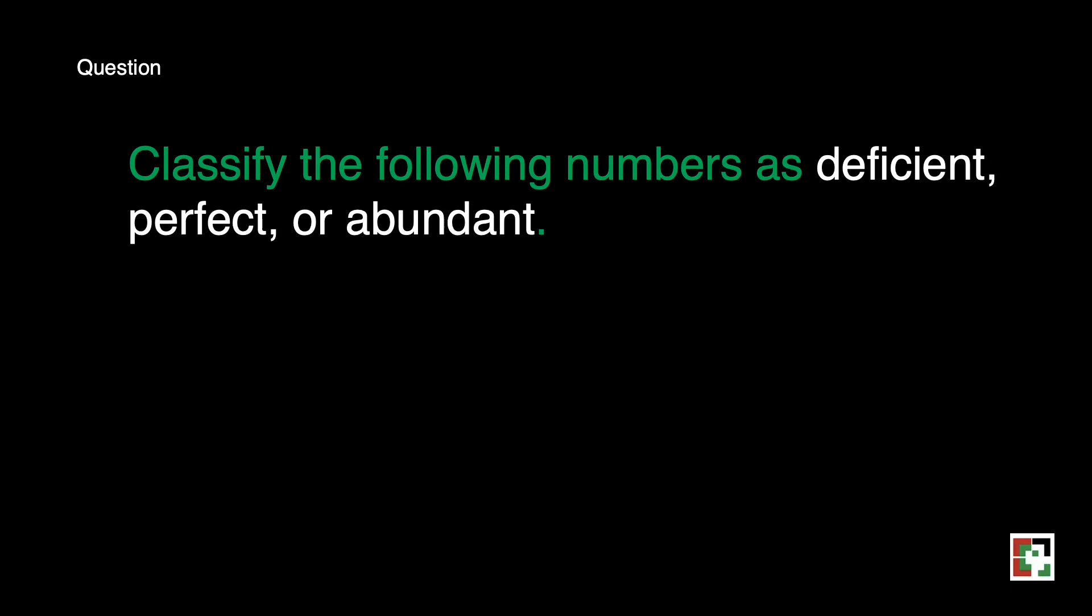Okay, we have this question. Classify the following numbers as deficient, perfect, or abundant. A, 22, B, 496, and C, 40.